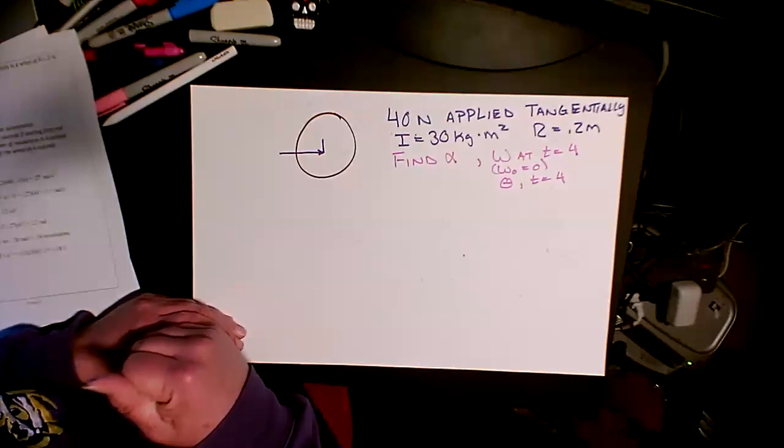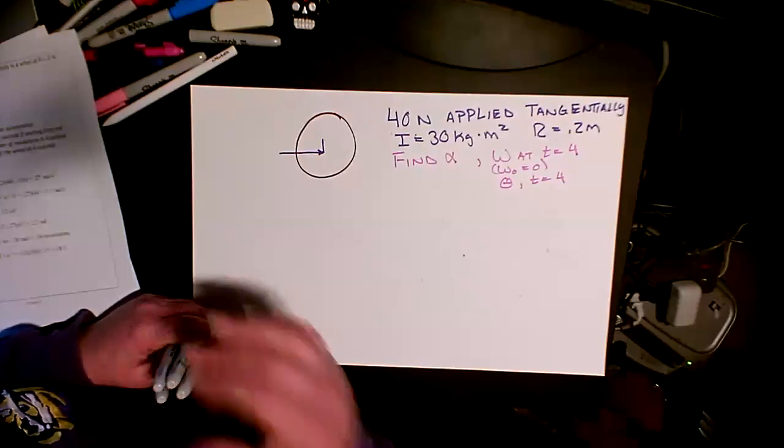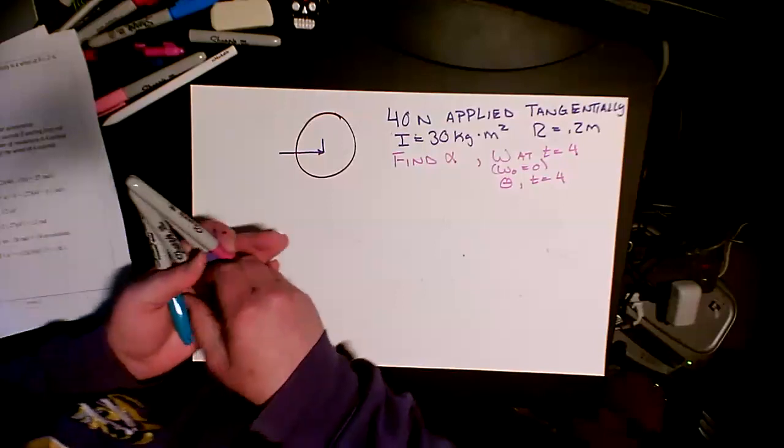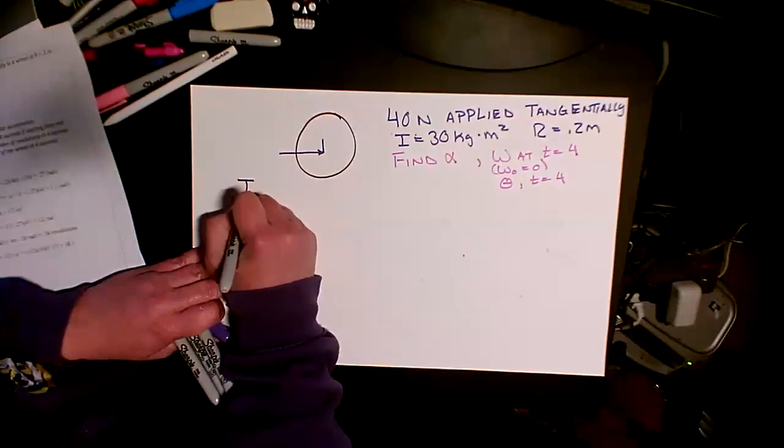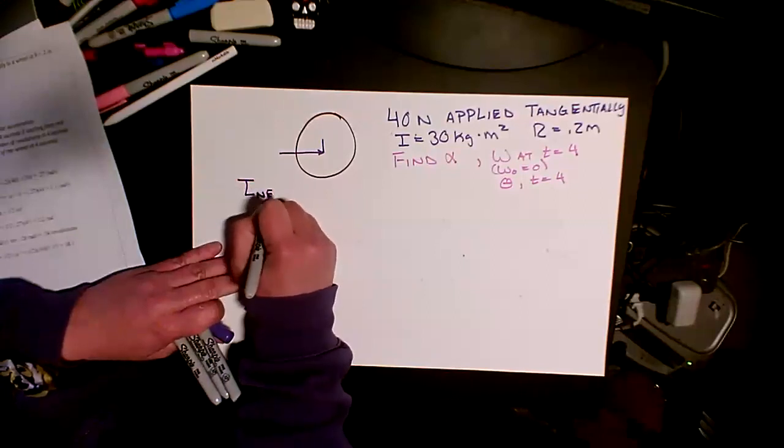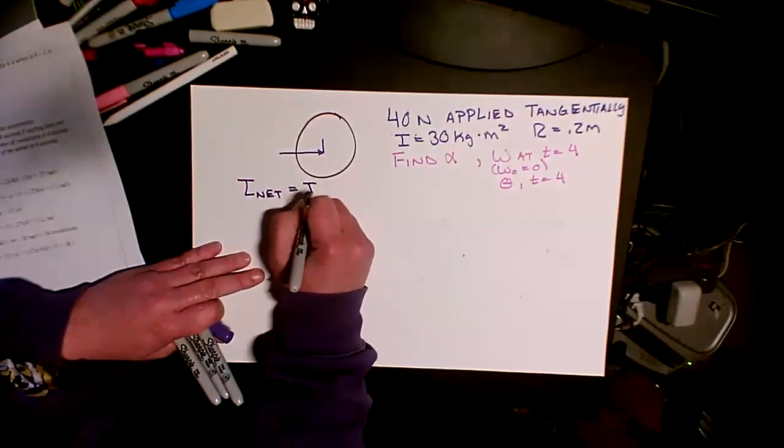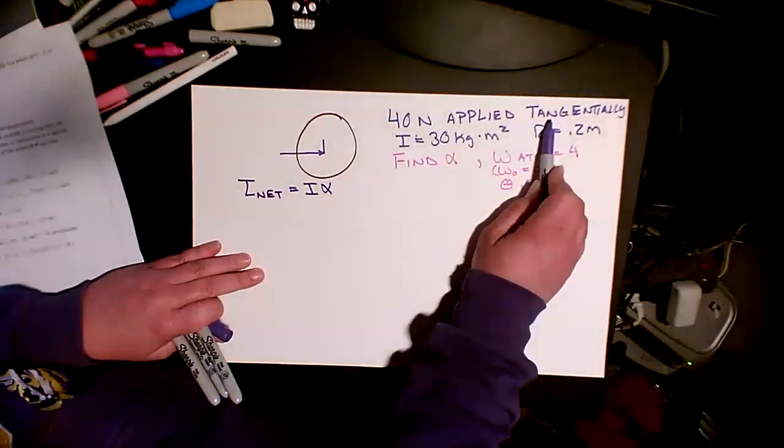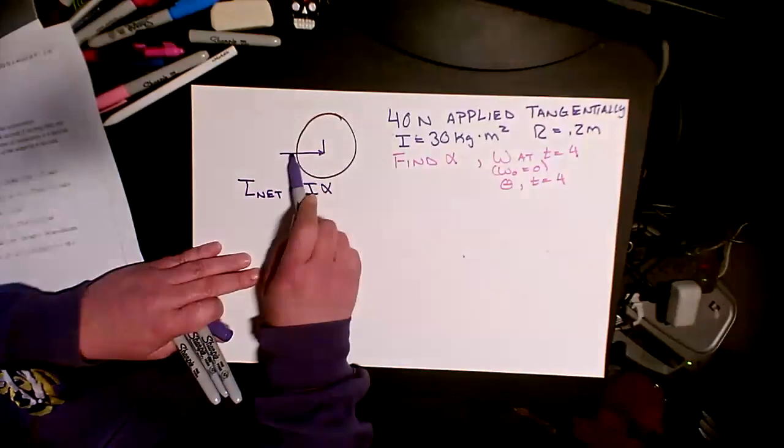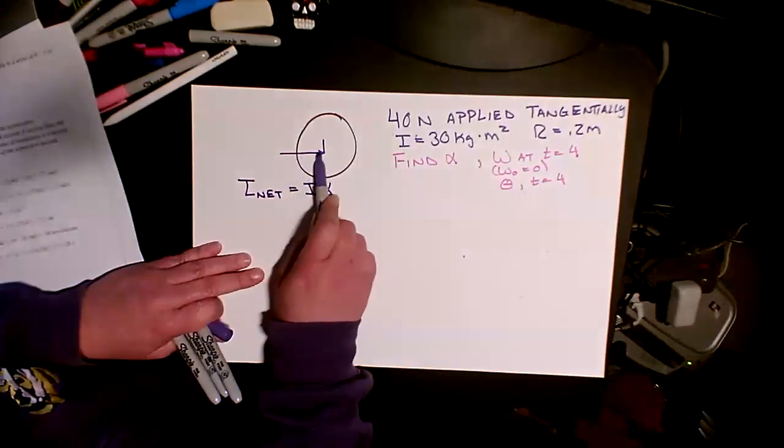It wants to know what is the angular acceleration. So now let's remind ourselves that a net torque, torque net, equals I alpha. So what it's telling us here is that it's been applied tangentially, so this is perpendicular, so that sine theta thing doesn't matter. It's sine of 90, so it's going to give us one.